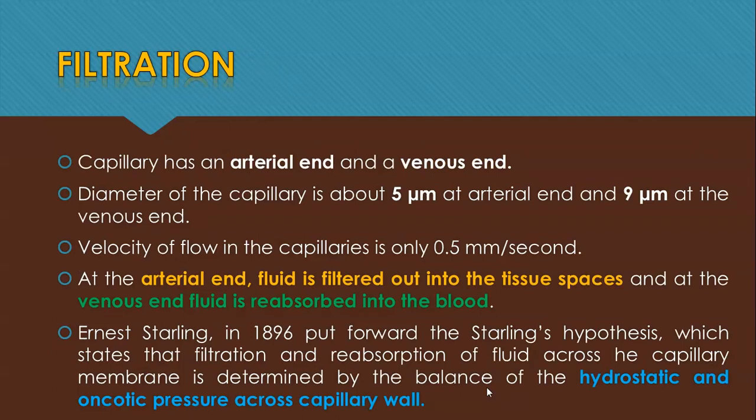Now we'll see how the process of filtration is carried out. There are arteries and veins, and in between them there is a capillary network. The diameter of the capillary is about 5 micrometers at the arterial end and about 9 micrometers at the venous end.